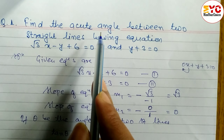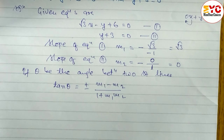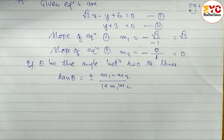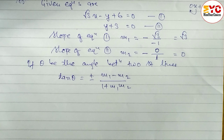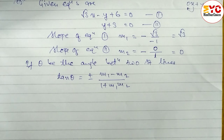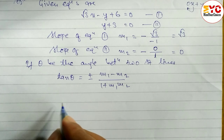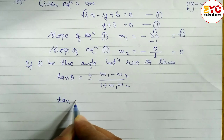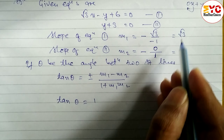Acute angle means less than 90 degrees. For the first quadrant, all trigonometric ratios are positive, so what we have to take is the positive value only. Therefore tan theta is equal to — taking the positive sign only.